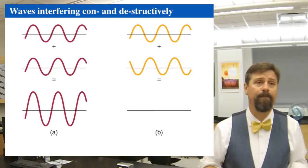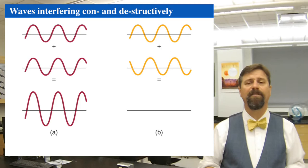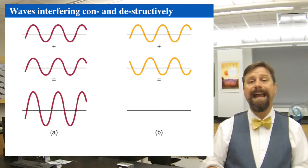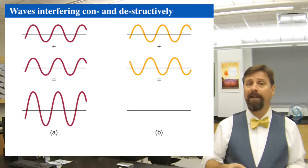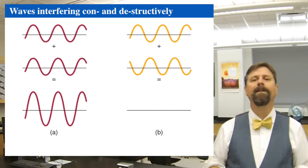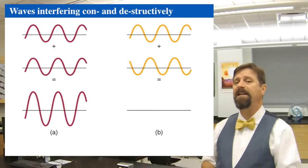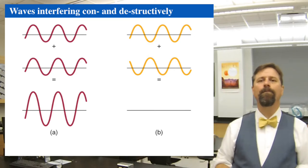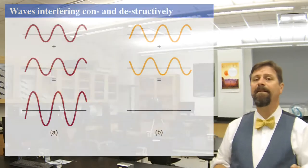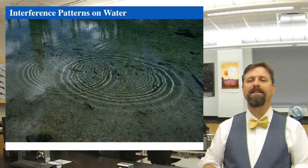So you can have constructive interference — waves adding together — or destructive interference, where they subtract. The trough acts like a negative number and the peak like a positive number. If two waves of height two have peaks at the same place at the same time, the height is four. But if a trough meets a peak, the height is zero and it's flat. Waves can pass through each other and produce silence. Constructive and destructive wave interference can be seen by dropping two stones in a puddle of water and watching the two outbound ripples interact.